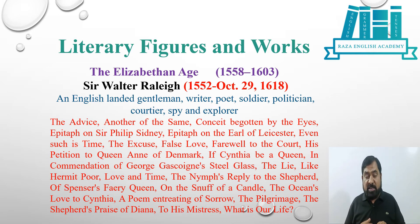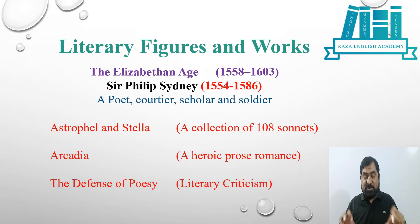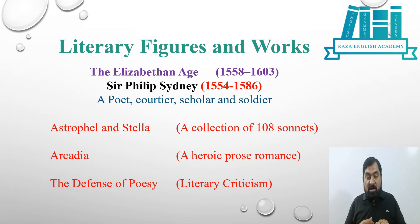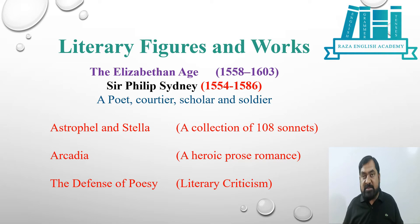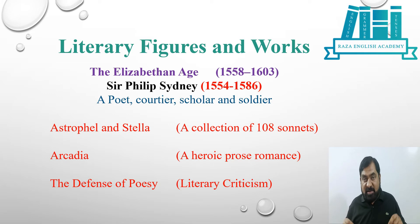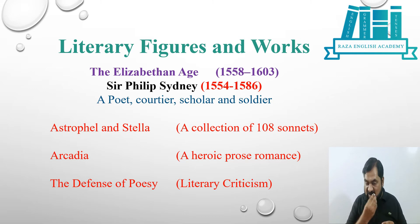The next important figure of the Elizabethan Age is Sir Philip Sidney. He was a poet, courtier, scholar, and soldier. His important works are Astrophil and Stella — a collection of 108 sonnets — Arcadia, a heroic prose romance, and The Defence of Poesy, which is a work of literary criticism. To date, The Defence of Poesy is a highly recommended book; the way he has defended poetry in this work is outstanding.